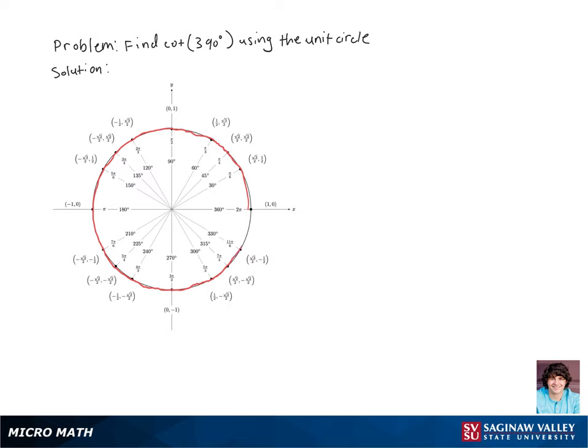Once we rotate all the way around the unit circle, we've rotated 360 degrees. So now we have 30 degrees left to rotate before we get to 390.